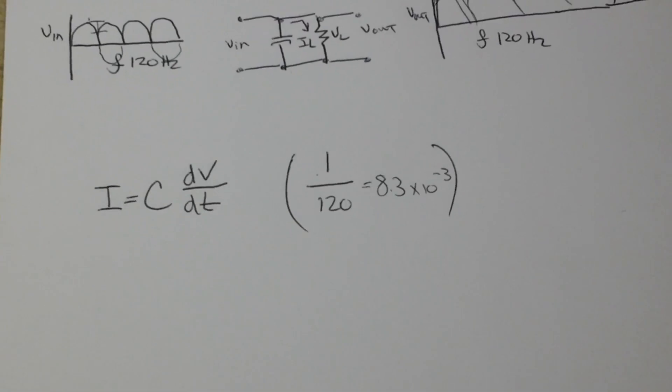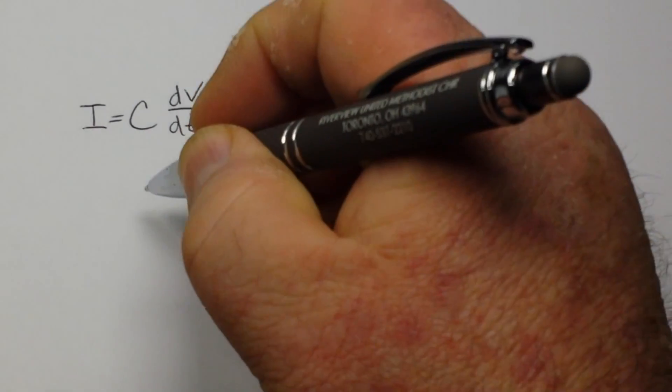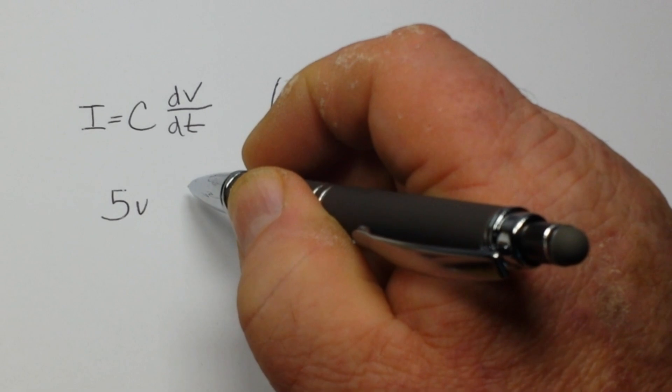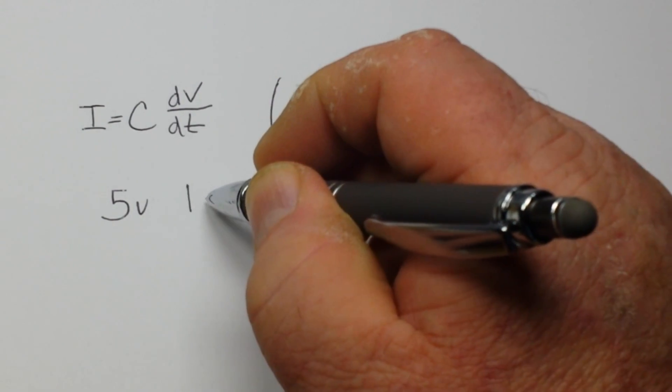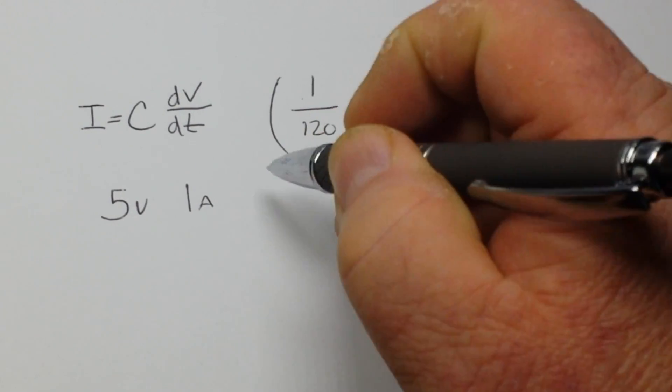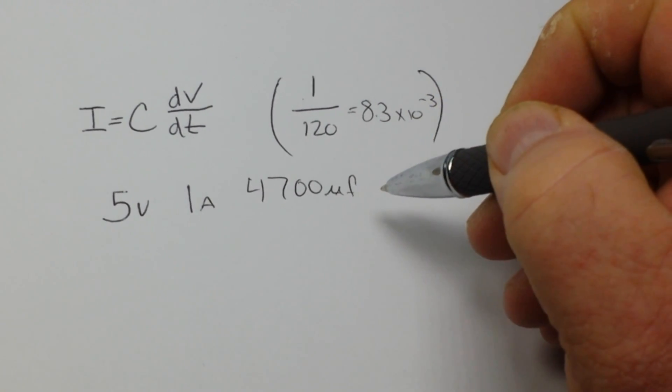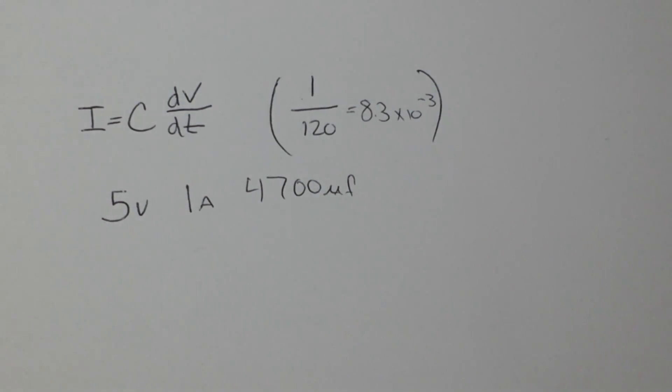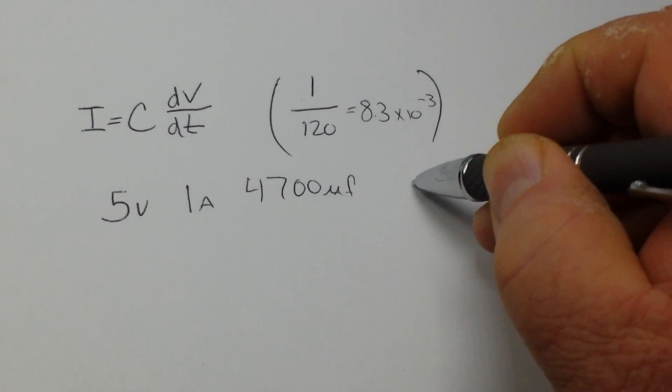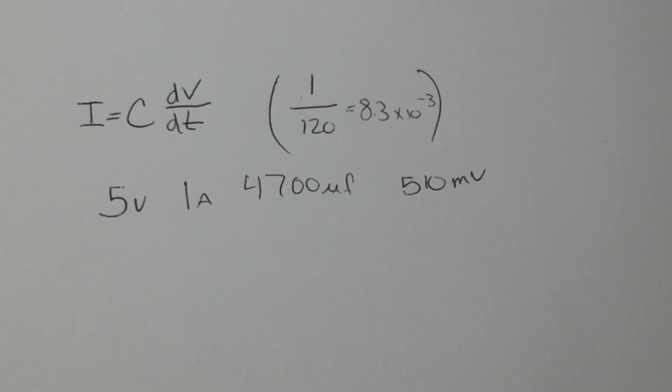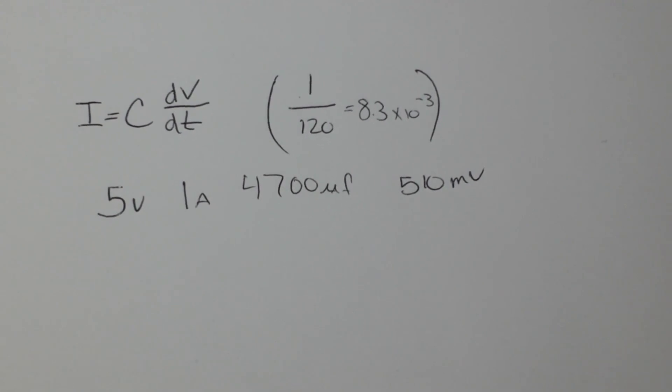All right, so let's test out our formula. Let's say we have a five volt supply, one amp load, and a 4700 microfarad capacitor. If you plug those numbers into our formula, you're going to get 510 millivolts. Now that would be over the 0.25 volts that we're looking for for a nice steady supply.